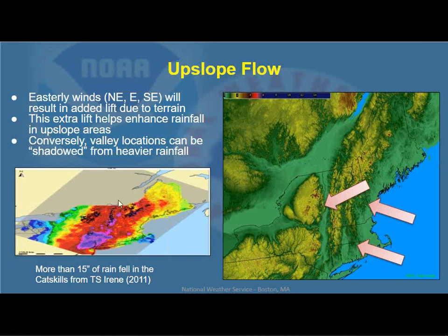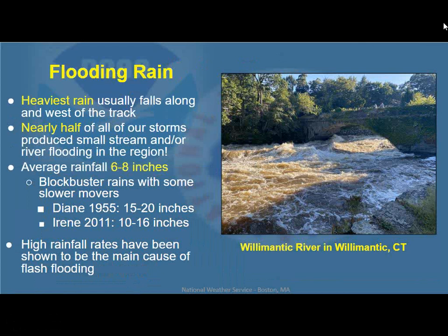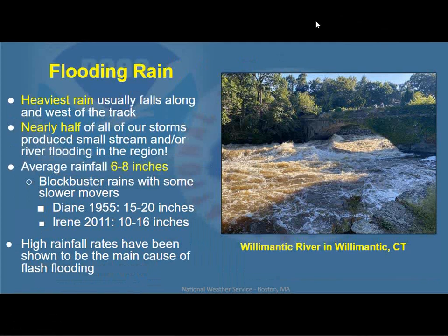From Tropical Storm Irene, more than 15 inches of rainfall fell in the upslope areas of the Catskills up into the Berkshires and the Green and White Mountains, resulting in just devastating flash flooding in those areas. From the flooding rain standpoint, the heaviest rain again falls along and west of the track in most cases. Nearly half of the storms in our region produced small stream and river flooding, even when conditions were dry leading up to the event. Back in 1999, Tropical Storm Floyd struck on the heels of a drought — it was a drought buster, ending with some minor river and small stream flooding that put a big dent in the rainfall deficit for that summer and effectively ended the drought.